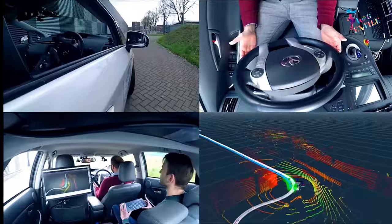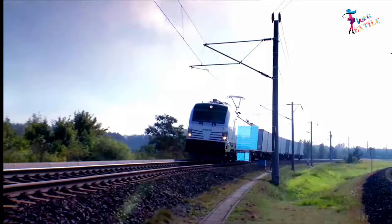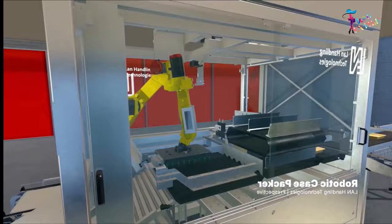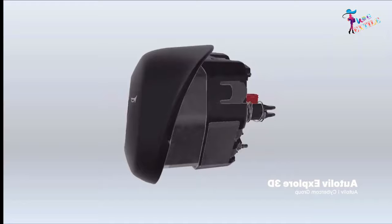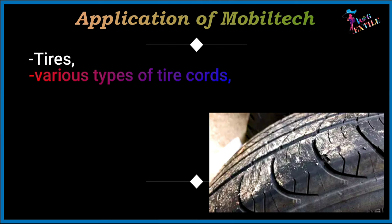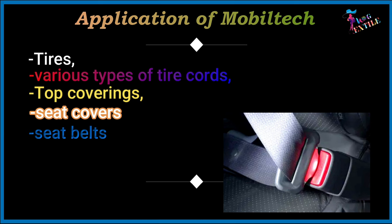Mobiletech refers to technical textiles used in the automotive and transportation industries. It is concerned with not only isolation and safety, but also comfort and aesthetics. Applications of mobiletech include tires, various types of tire cords, top coverings, seat covers, seat belts, airbags, and helmets.